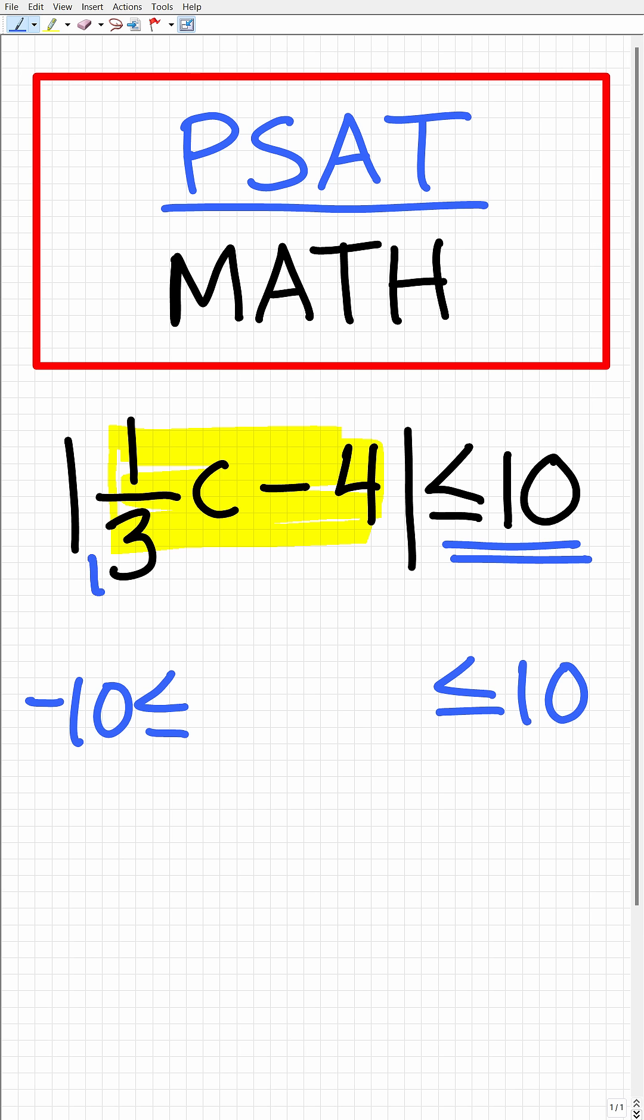In the center, we're going to put 1/3 C minus 4. So this is the setup. And now we have a compound inequality. And we want to go ahead and clean this compound inequality up for C.